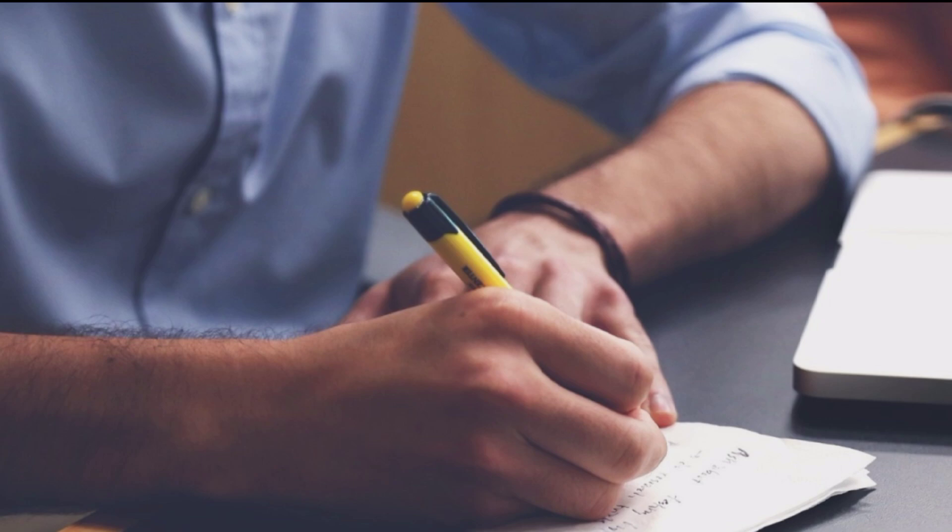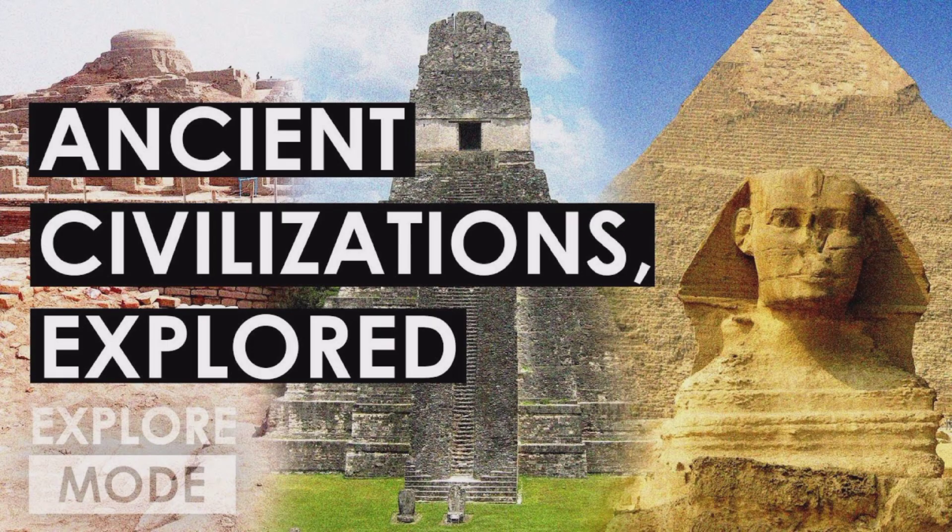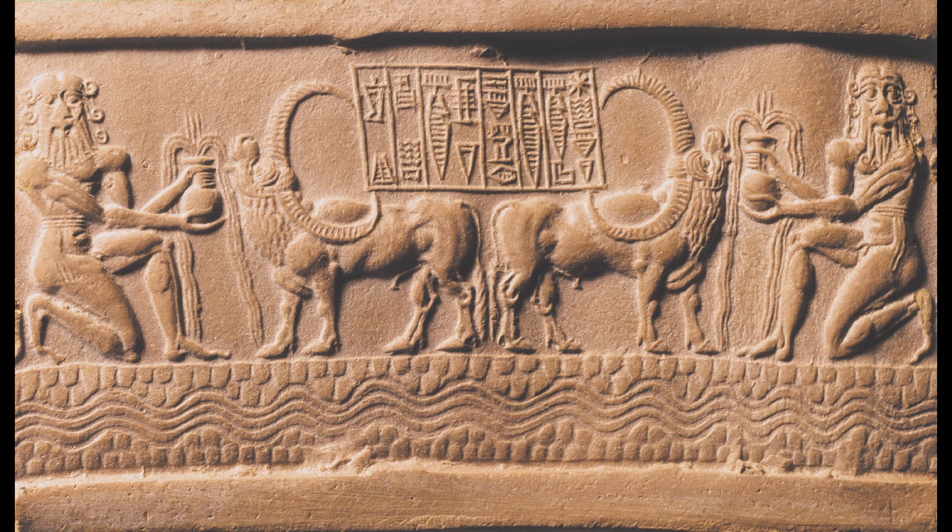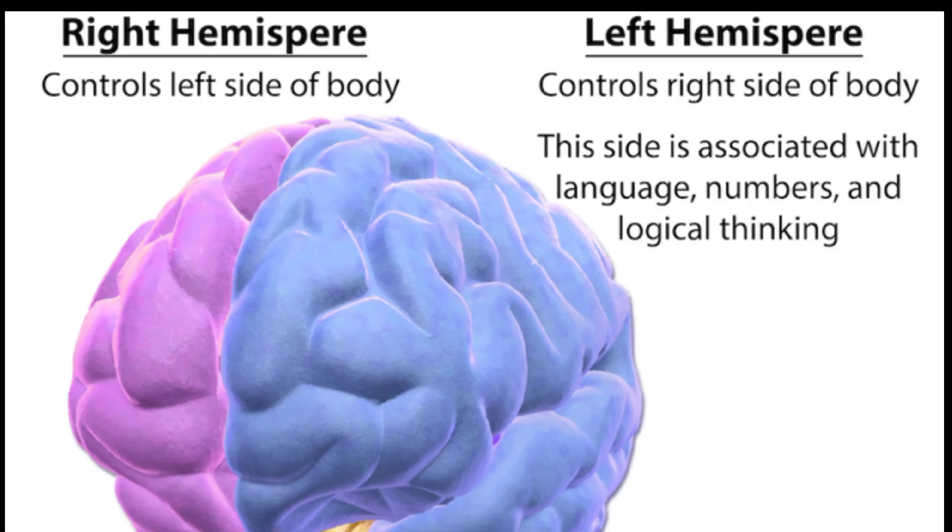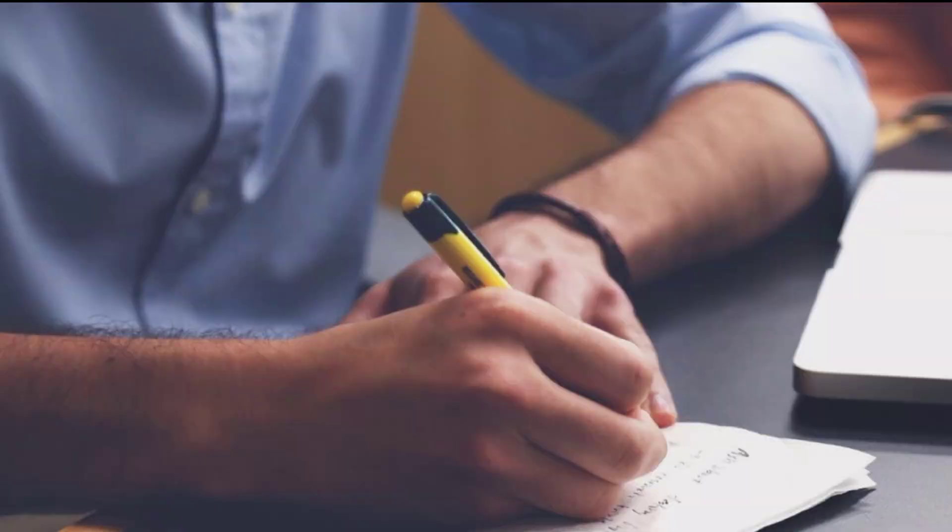In conclusion, the predominance of right-handedness among humans has its roots in a fascinating combination of genetic, biological, and cultural factors. It seems that the development of language and the functional specialization of our brain hemispheres played a crucial role in shaping our dominant hand preference.